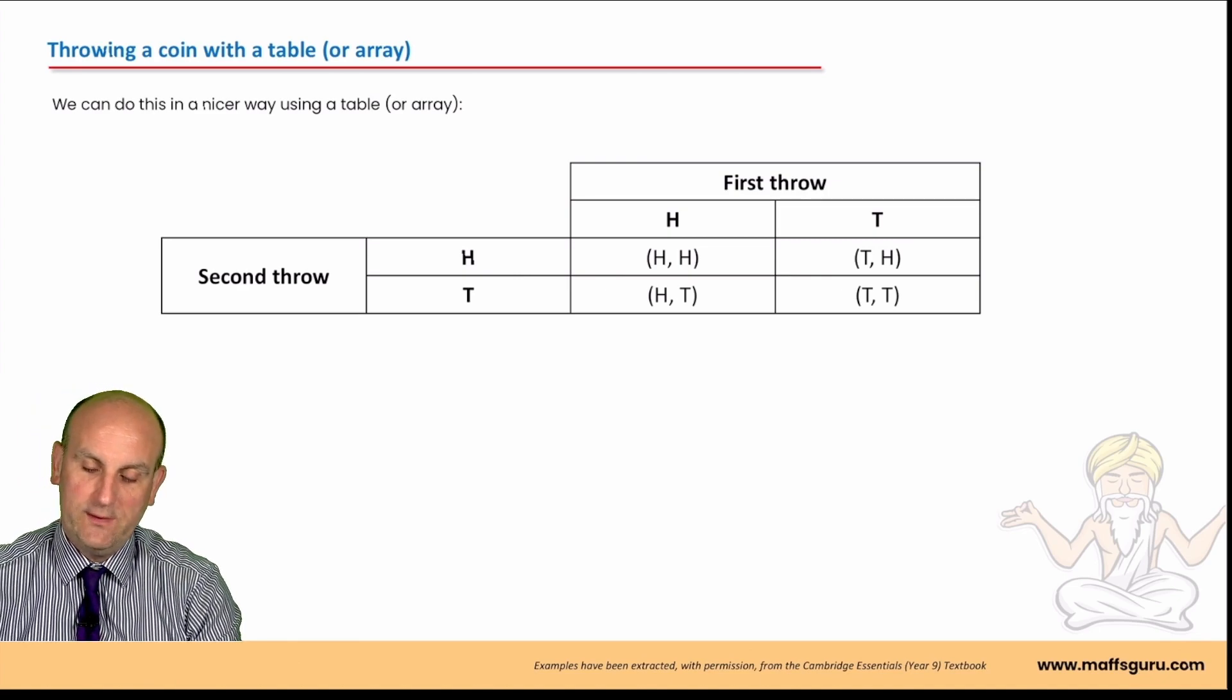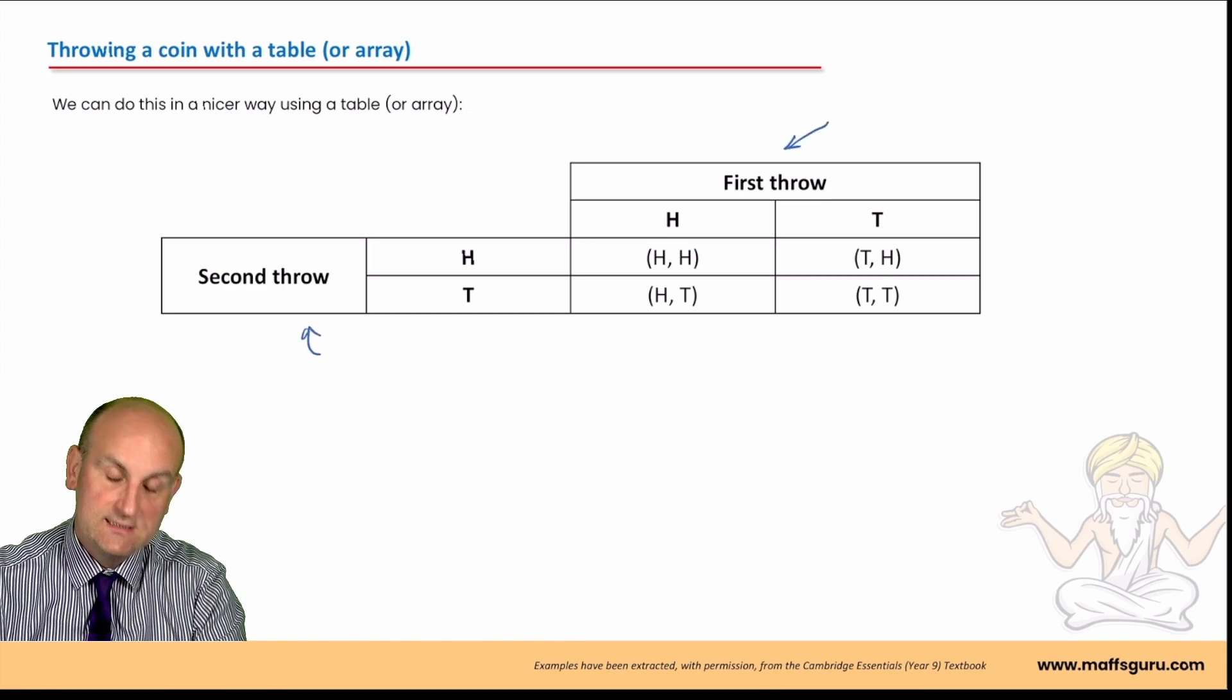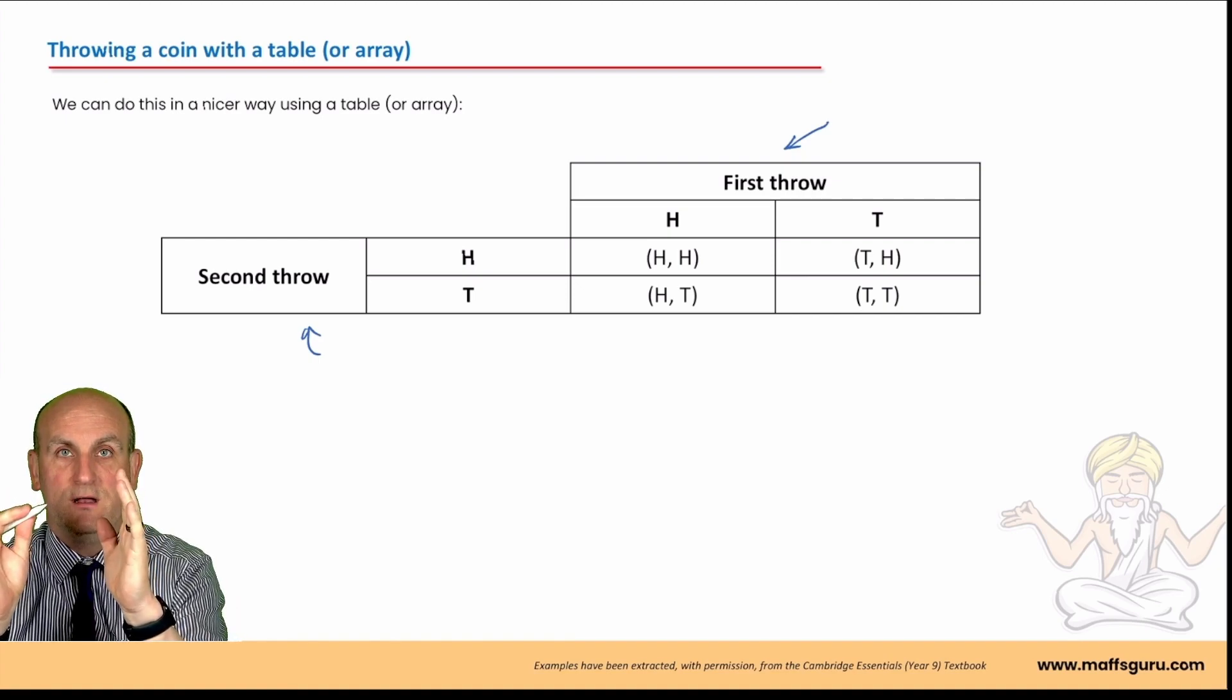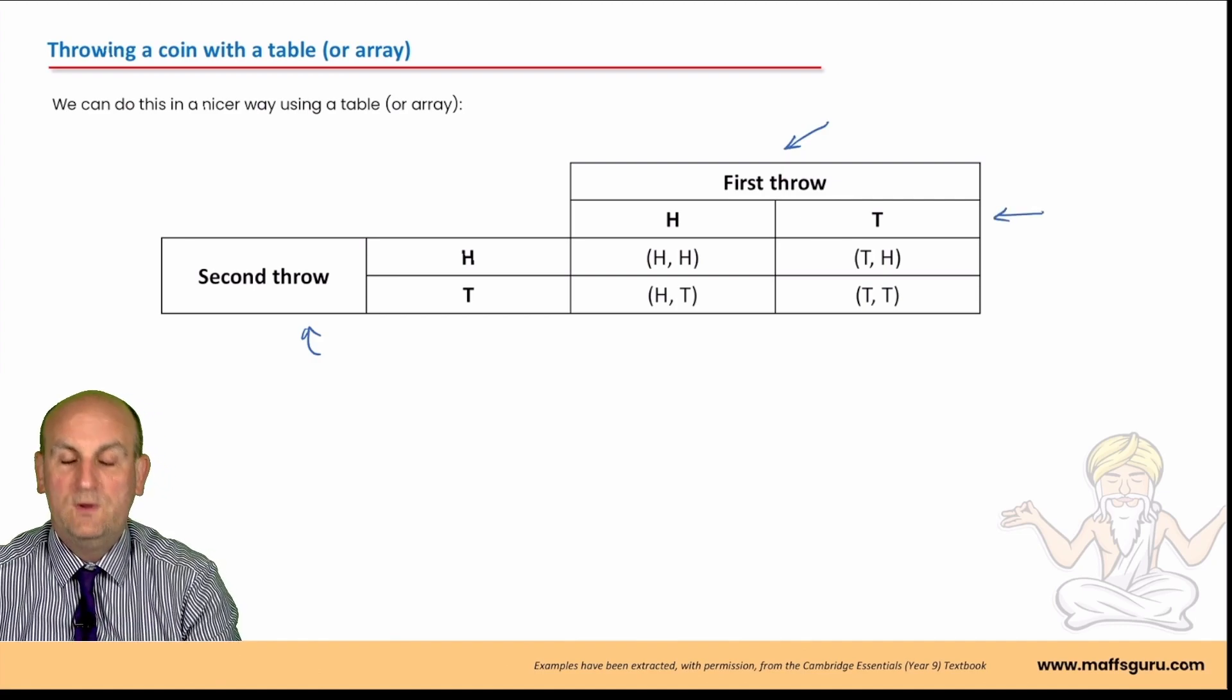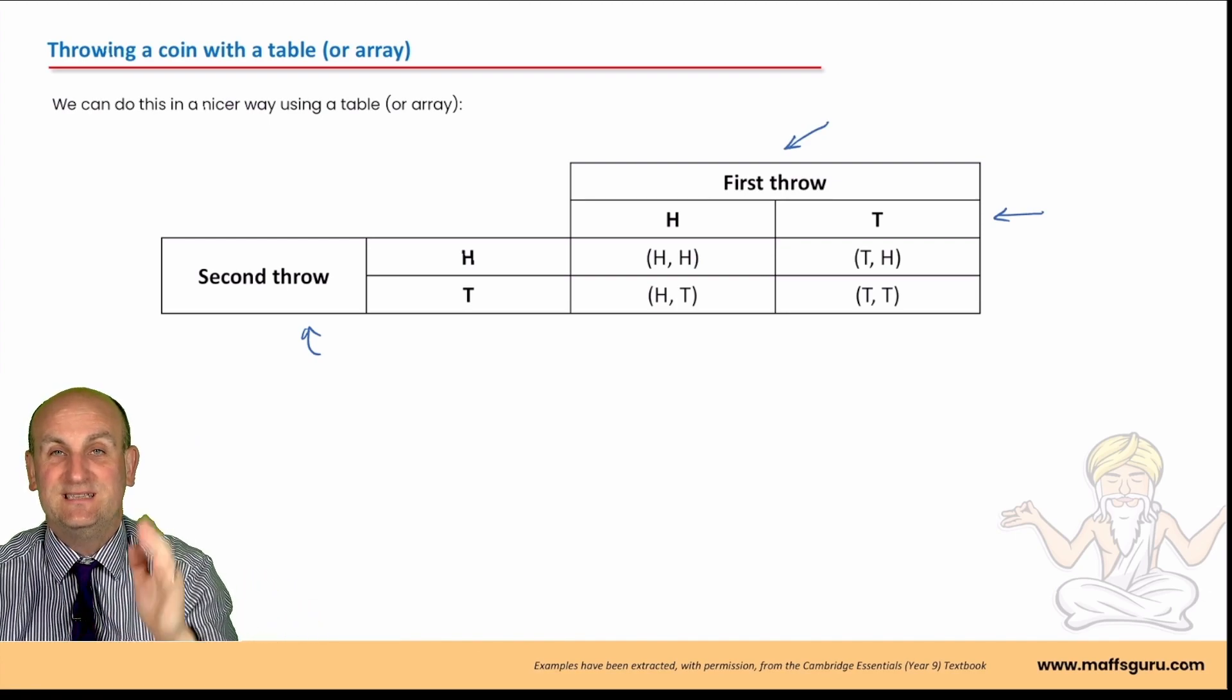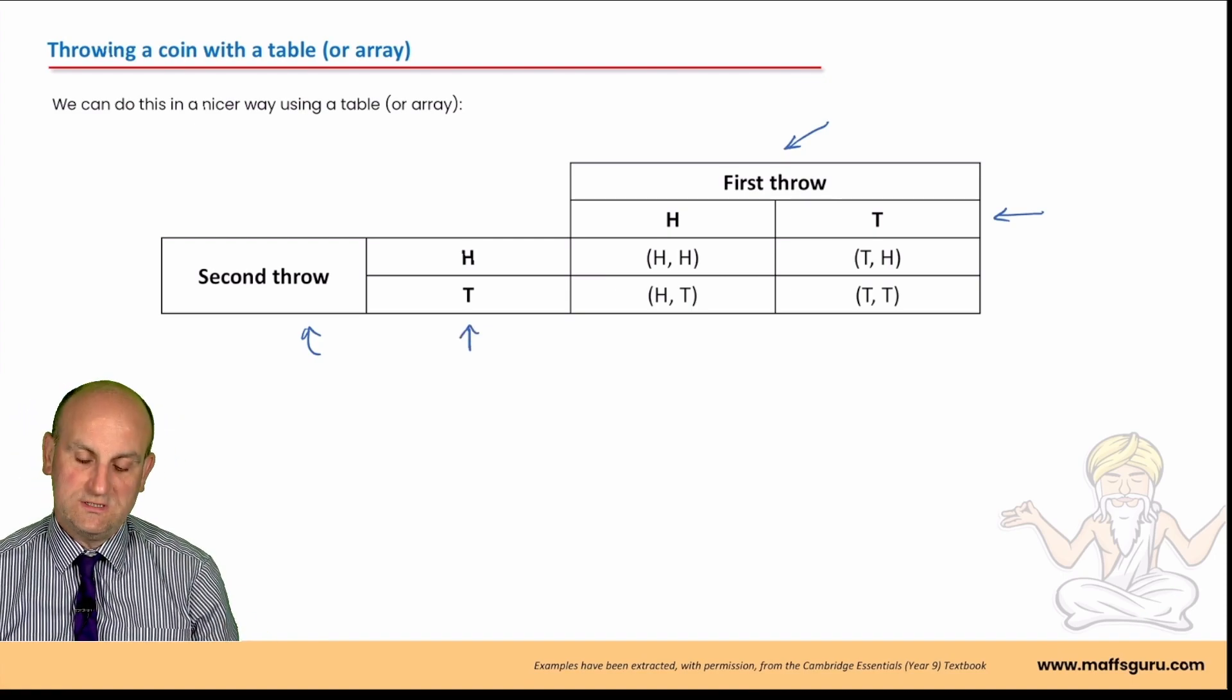So we can do this in the following. Now, the order of these tables again is important. What you'll notice is I've written here first row and I've written second row. Generally speaking, convention is the columns are the first thing we do, the rows are the second thing. And you will notice that for our first row, we've written the two outcomes. Because it's head or tail for a coin. And we notice for our second row, we have head and tail again.